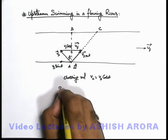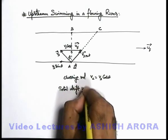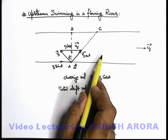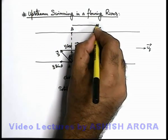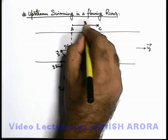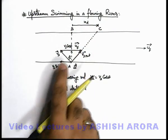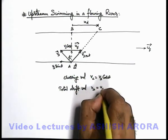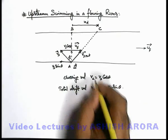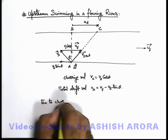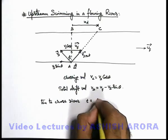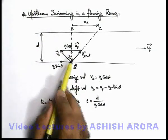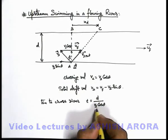The total drift is provided by u_f and v_s sin θ. Here v_s sin θ is opposite to the river current. So the total drift velocity is u_f minus v_s sin θ. Time to cross the river is d upon v_s cos θ. This can also be written as AC divided by the magnitude of v_s_net using the triangle rule of vector addition.